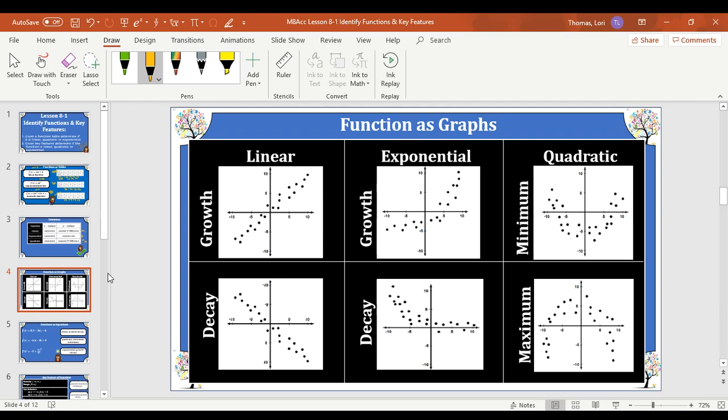For the quadratics, we don't use growth or decay to describe, but we just describe the vertex. So here we have a quadratic whose vertex would be a minimum point. This one, we have a vertex that would be a maximum. So on this one, our a value would be negative. On this one, our a value would be positive. Over here on the linear growth, our slope, our m, would be positive. Our decay, our slope, would be negative.